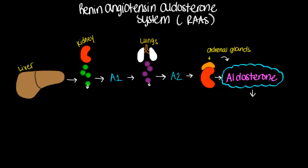One of our Instagram friends requested a review video on the RAAS system, and that stands for the renin-angiotensin-aldosterone system. I'm going to make this very short and sweet because I think it's easiest described with pictures and just getting to the point. First, I want to make sure that we understand what the RAAS system does. Why is it in place? What is it supposed to do?